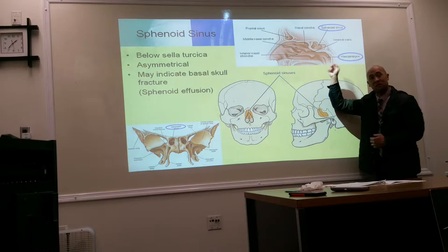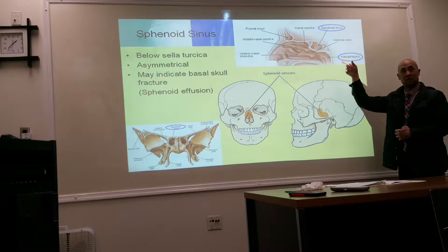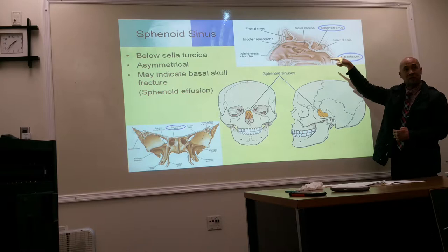On the lateral view, if we see a straight line going across this area, that is an indication that there might be a fracture on the basal part of the skull.